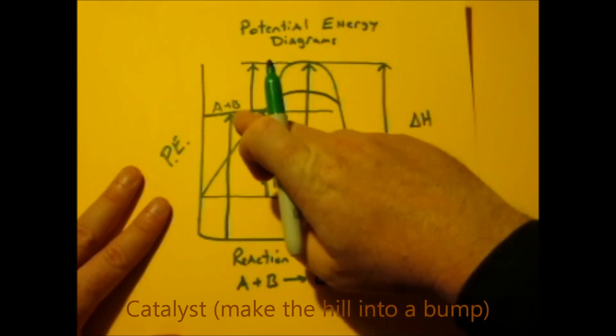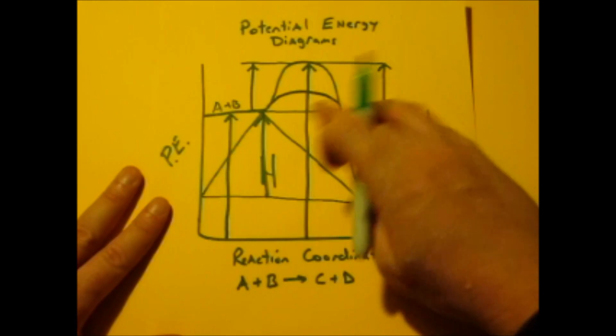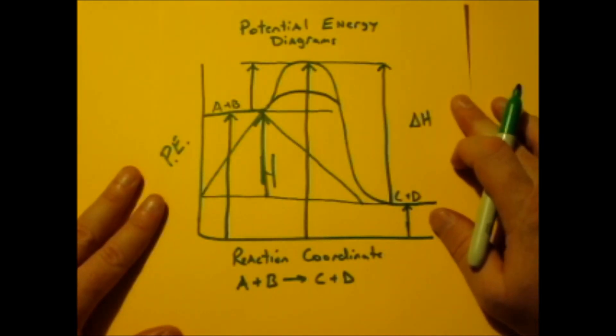And when you draw that, make sure you don't touch this line, make sure you don't touch that one. So make this hill into like a little bump, because you're going to have to draw that, especially if you take it in New York State regents.